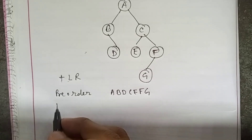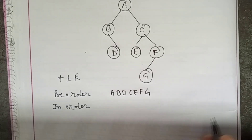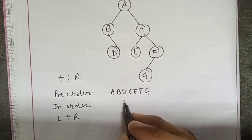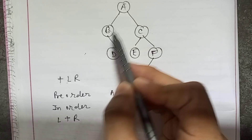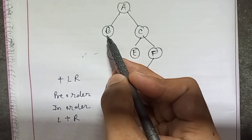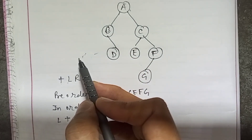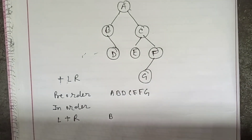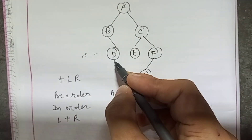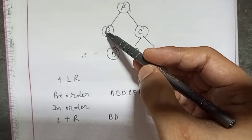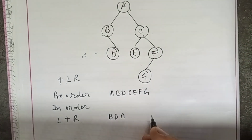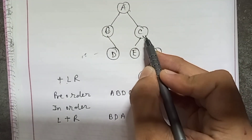Now we will do in-order traversal. In in-order we go left, root, right. Let's begin — the left of A is B. The left of B is nothing, so we write B first. Then left is done, we go for root, so we write A. Then we go for left, root, right.